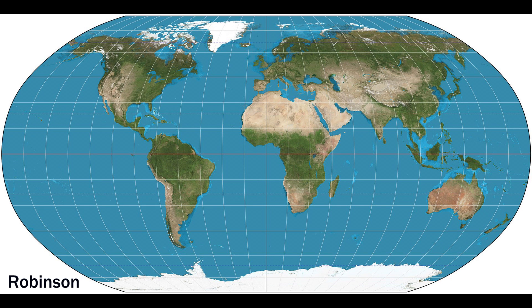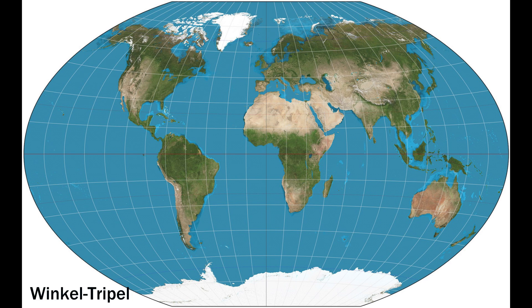Perhaps the most well-known of the compromise projections is the Robinson. There are many benefits, including the curved sides meaning the polar areas are not stretched out as much. But there is still some distortion as you have to compromise a little bit of everything. For a while, this was the standard map projection of the National Geographic Society. I've always felt that the Robinson and ones very similar to it are the overall best-looking maps showing the globe. Another popular projection in the same general vein as the Robinson is the Winkel Tripel. In 1998, the National Geographic Society switched from using Robinson as their official projection to the Winkel Tripel.